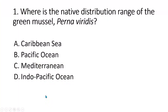Number 1. Where is the native distribution range of the green mussel, Perna viridis? A. Caribbean Sea. B. Pacific Ocean. C. Mediterranean. D. Indo-Pacific Ocean. The answer is letter D, Indian Ocean. Green mussel Perna viridis is native to the Indian Ocean, specifically to the waters of the Indian subcontinent and Southeast Asia.